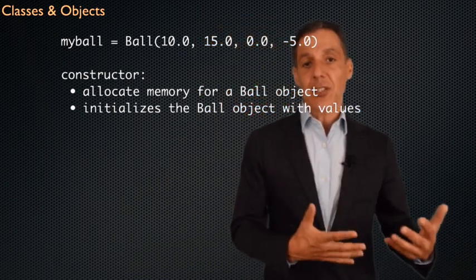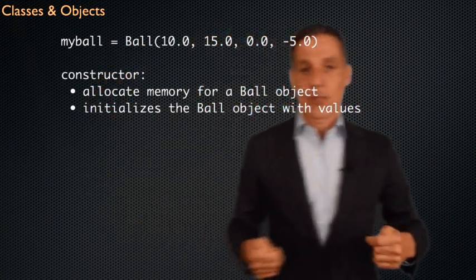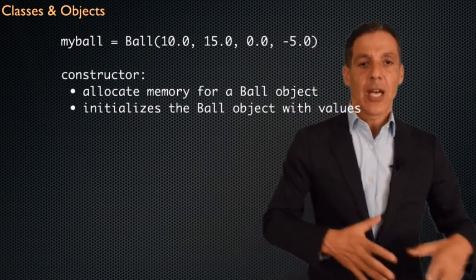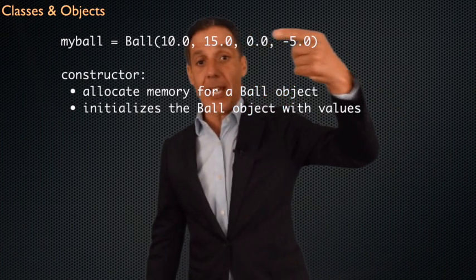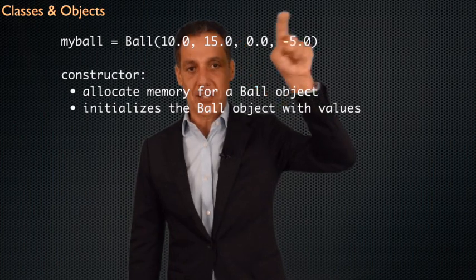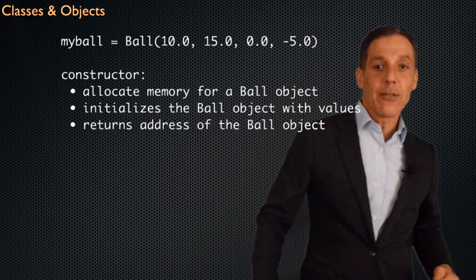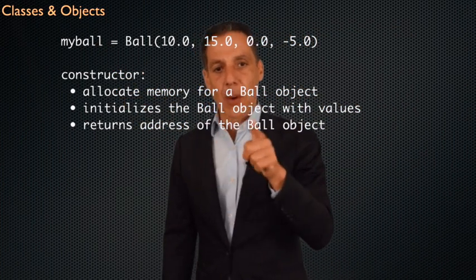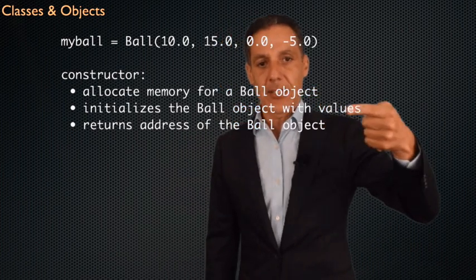Number two, it's going to initialize the data based on what you passed it. So now what it says is, okay, I can have multiple balls the same way I can have multiple houses. I'm going to build an object. I'm going to allocate memory for it. And I'm going to store the data that the user wants. X, Y position, VX, VY velocity in the X and the Y direction. Good. Initialization. And it returns to you, this is really important, the address of the ball object that was allocated in memory and initialized for you.